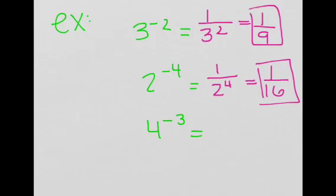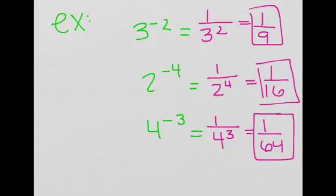4 to the power of negative 3 is equal to 1 over 4 to the power of 3, which is equal to 1 over 64. I hope that helped and I hope to see you soon.